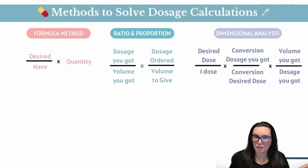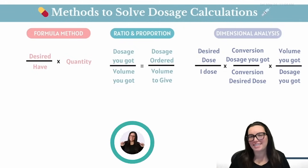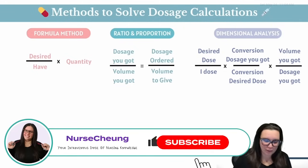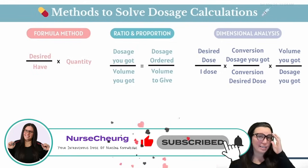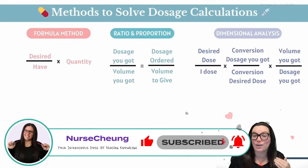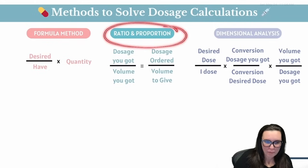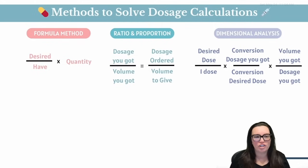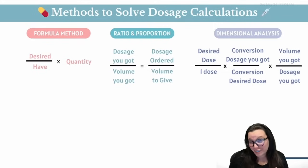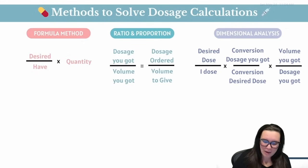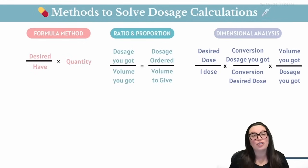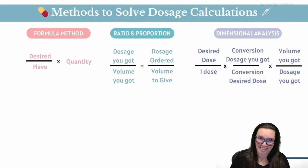When it comes to solving dosage calculations, you have three main ways that you can calculate meds. You've got the formula method, also known as desired over have — think 'I want it, I got it.' You've got ratio and proportion, which is the old school math teacher realness kind of calculation. And then you have dimensional analysis, which is going to be our main character in all of our math calculations today.